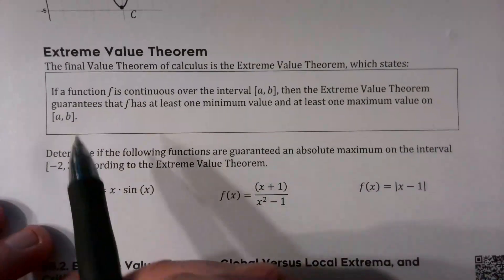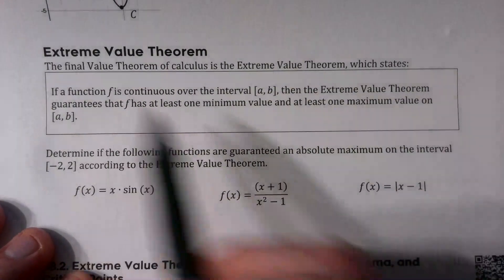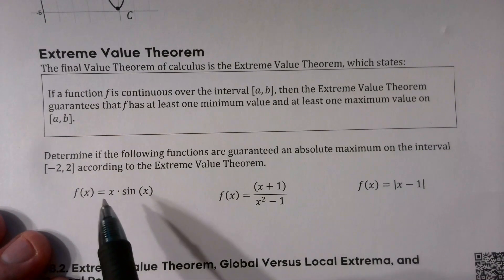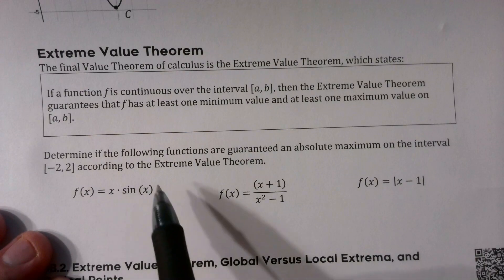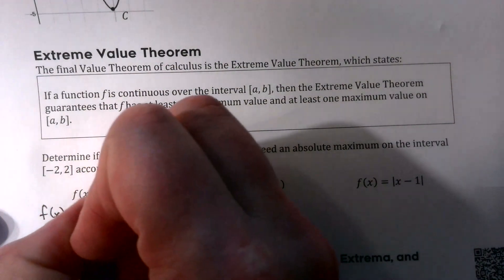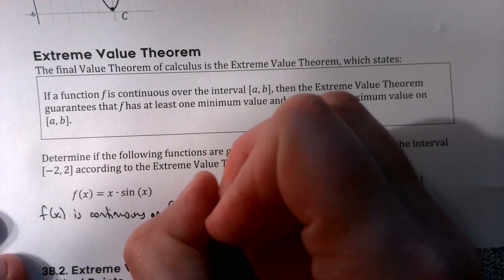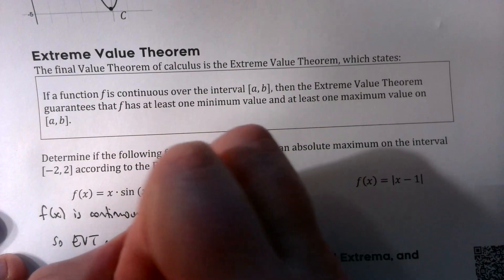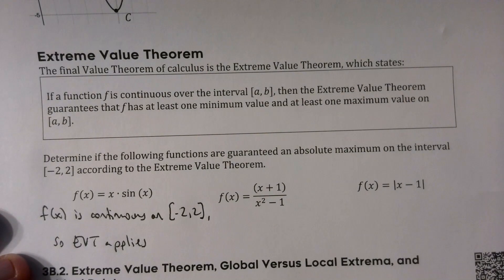Let's determine if the following functions are guaranteed to have an absolute maximum — guaranteed by the EVT — on the interval negative two to two. For f(x) = x·sin(x), there's no value I can't plug in for x, and no value I can't plug in for sine of x. So f(x) is continuous on the closed interval negative two to two, meaning the EVT does apply and it will have an absolute maximum value somewhere on that interval.